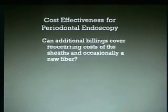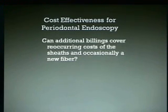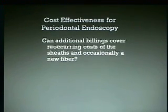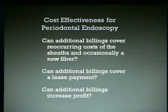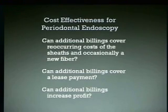Cost effectiveness: can additional billings cover the recurring costs of the sheaths and occasionally buying a new fiber? The sheaths are $40 and a new fiber is under $1,200. The fibers tend to last 70 to 80 uses. Can additional billings cover a lease payment? Say you bought this on a lease — on a $10,000 lease over five years, you might be paying less than $200 a month. Can additional billings increase profit? They have for us.